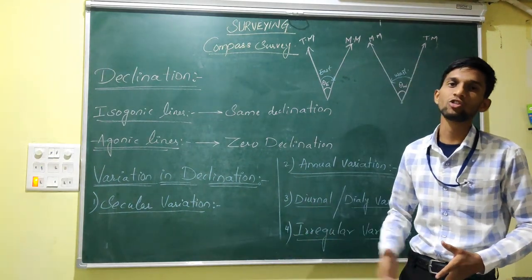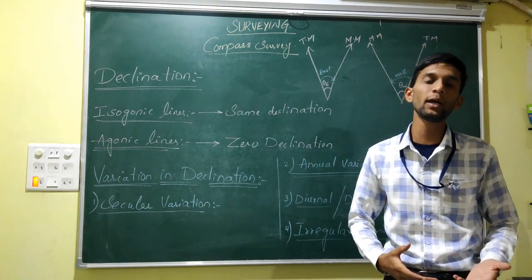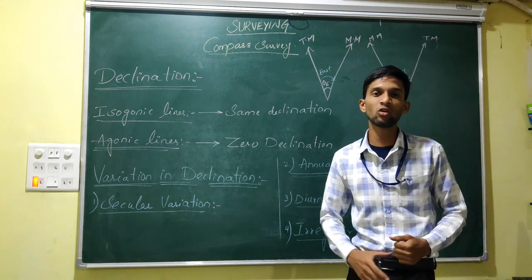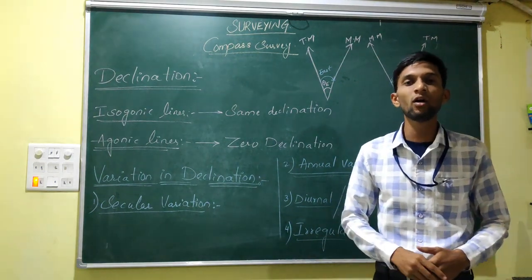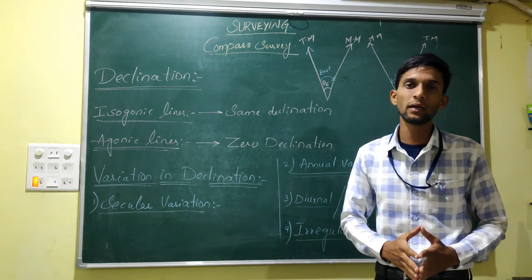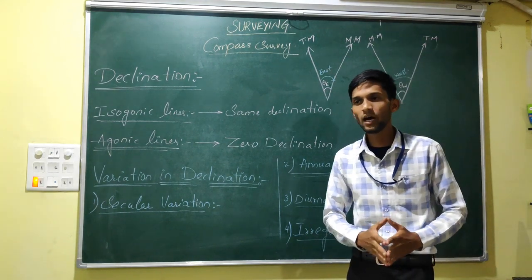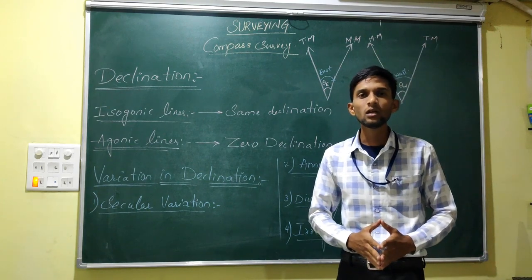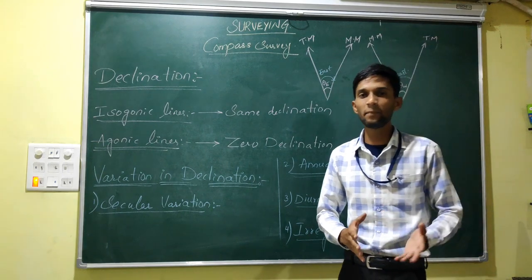This is our declination. How can we find it out? First, we have to find out the true meridian or true bearing with the help of astronomical surveys. And then we can find out the magnetic bearings. So the difference gives us the declination at that point.